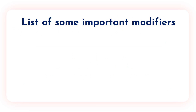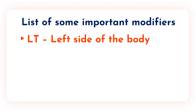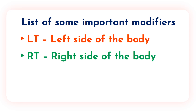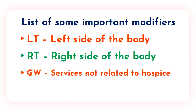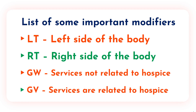Here is a list of some important modifiers. LT is used to indicate the left side of the body. RT is used to indicate the right side of the body. GW is used when services are not related to hospice. GB is used to indicate services are related to hospice.